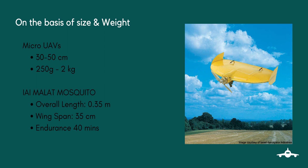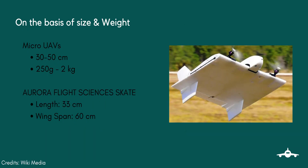Examples of micro UAVs are the Israeli IAI Malak mosquito with a wingspan of 35 centimeters and endurance of 40 minutes. The US Aurora Flight Sciences kit with a wingspan of 60 centimeters and length of 33 centimeters is also an example of a micro UAV.